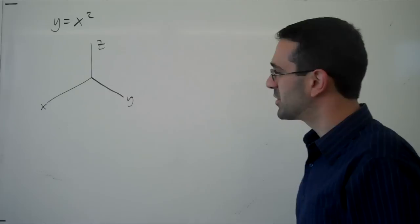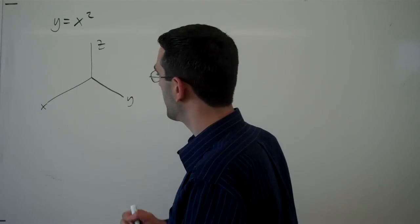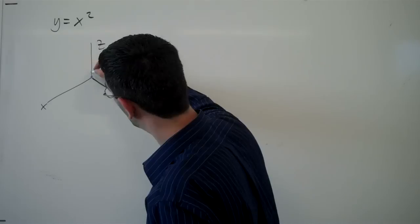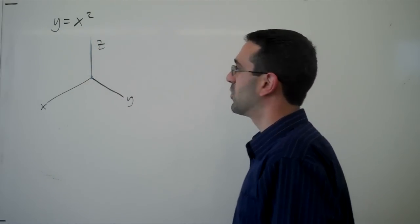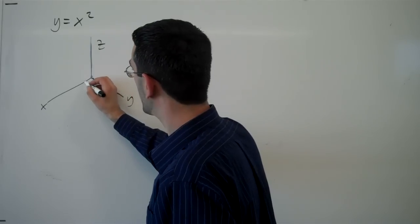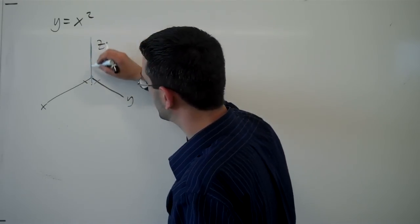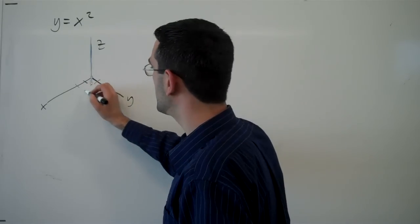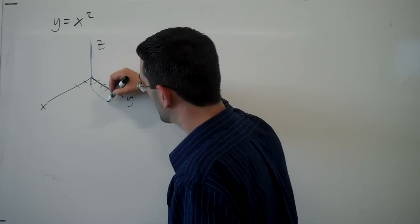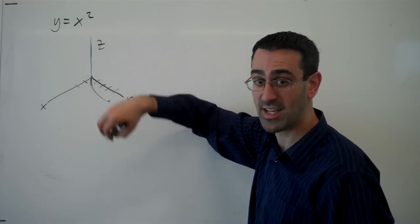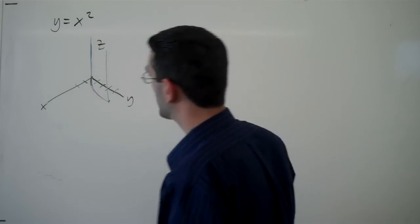So if we try to imagine what this looks like, if x is 0, y would be 0, but z could be anything it wants to be. If x is 1, y is going to be 1, but z could be whatever it wants to be still. If x is 2, y is 4. So we're sort of getting that parabola shape in the x, y plane, but then z can be anything it wants to be.